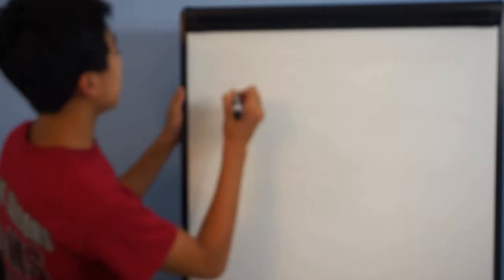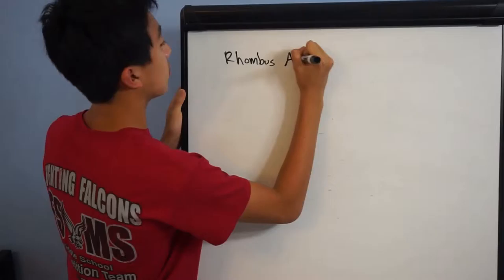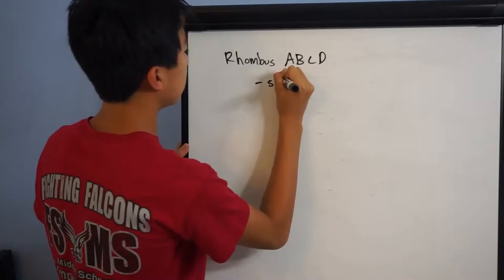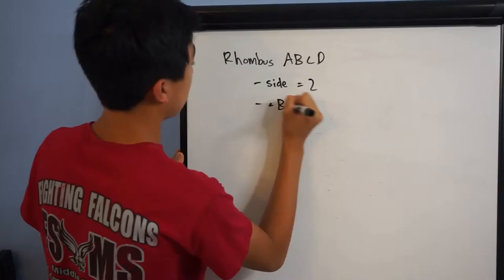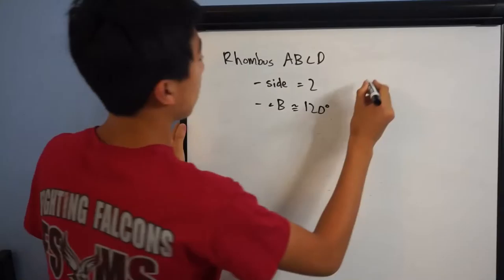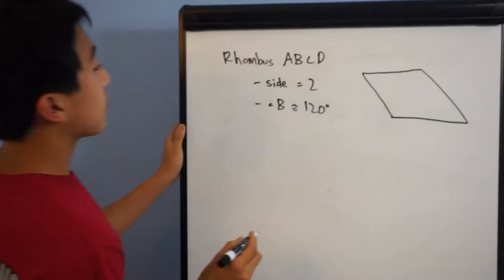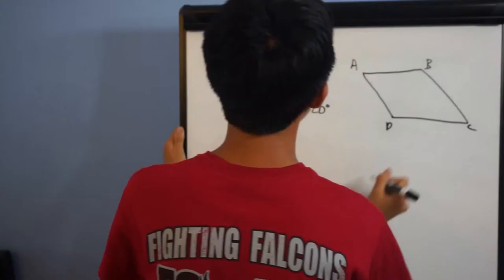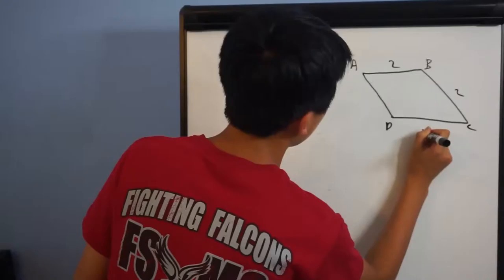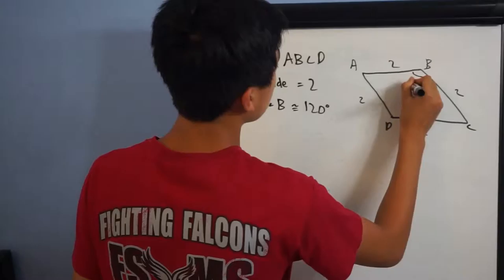What is the area of R? The problem gives us a rhombus ABCD, so let's just write it out here. We have the conditions that its side length is 2, and we also know that angle B is 120 degrees. The problem gives us a diagram — our rhombus looks like this, and so this is ABCD. By the problem conditions, we know the side lengths are all 2. This is a rhombus, so all the sides have equal length, and we know angle B is 120 degrees.